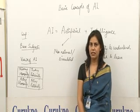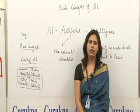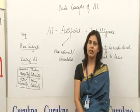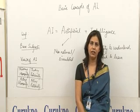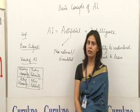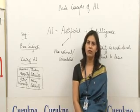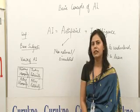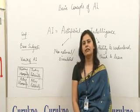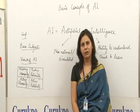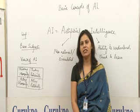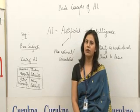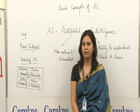Now, acting rationally — we want to develop a system which can act on the basis of available facts and available beliefs. On combining all these views, we can have a good AI system. Thus, a system which can think humanly, act humanly, think rationally, and act rationally can be a very good artificial-based system.